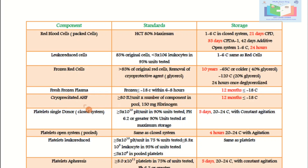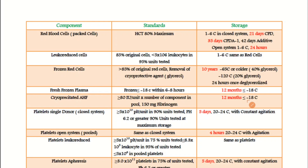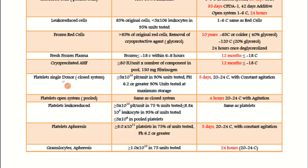For cryoprecipitated antihemophilic factor, there should be more than 80 international units of Factor VIII per unit. When pooling 4–5 units, Factor VIII is tested in each unit and multiplied by the number of units in the pool. There should be at least 150 mg of fibrinogen per unit. The expiry is one year when stored at −18°C.